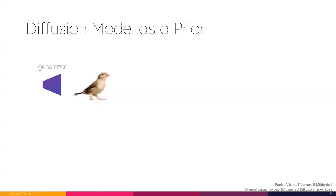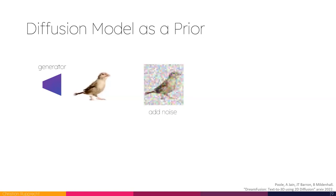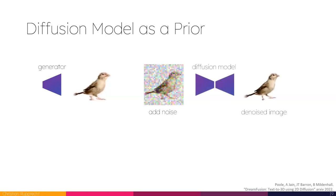The task we're looking at here is generating a 3D estimate given a single image — single image 3D estimation. We have a generator that generates a 3D representation and then renders an image from that. We want to use a diffusion model as a prior to improve this generator. The way this is done now — called the SDS loss — is you add noise to your image, use your diffusion model to denoise it, which brings the generated image closer to the data manifold, giving you a better image, and then use that as a target for your generator.